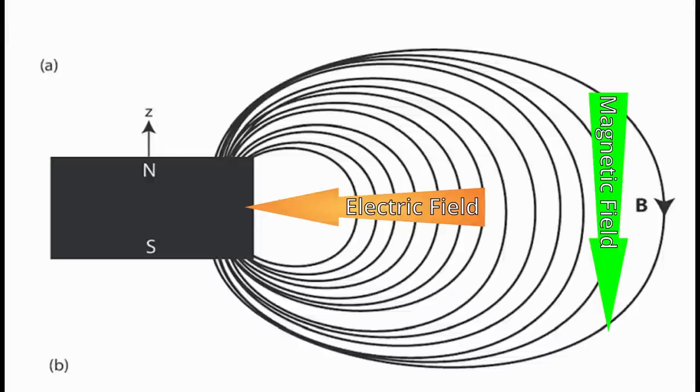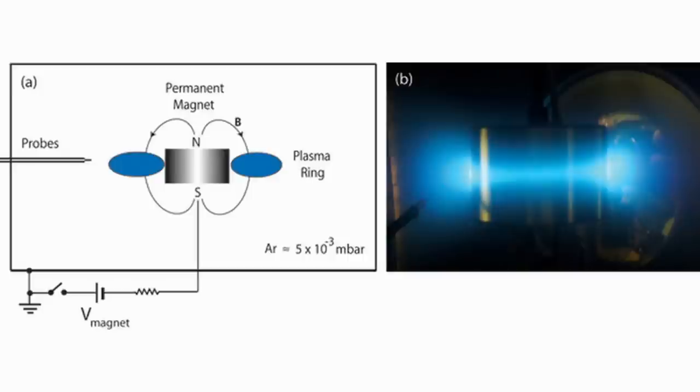A cross-field configuration is where the electric and magnetic fields are perpendicular to each other. The simplest cross-field discharge consists of a permanent magnet which functions as a cold cathode and a cylindrical wall chamber as the anode.